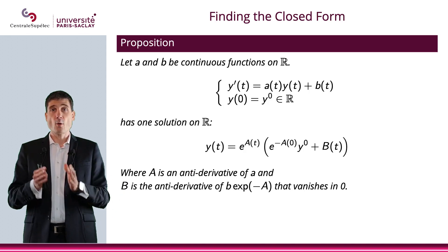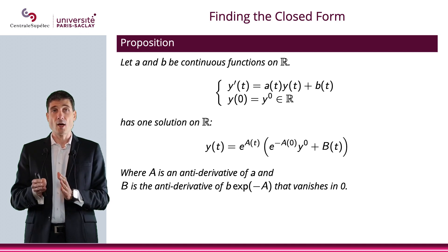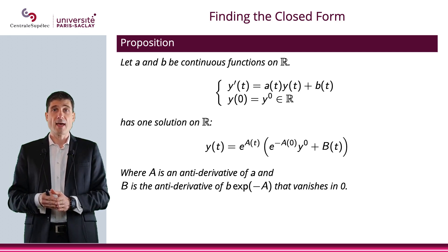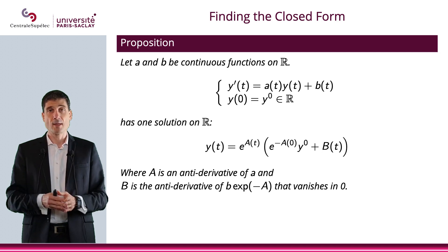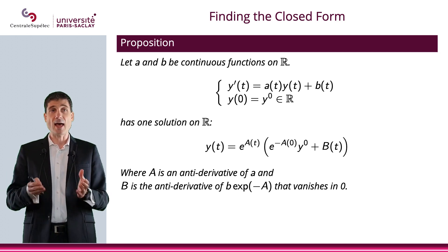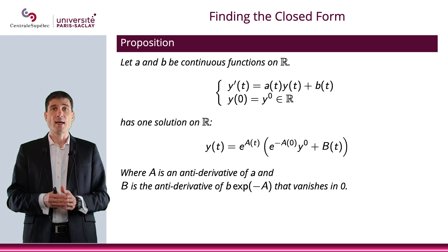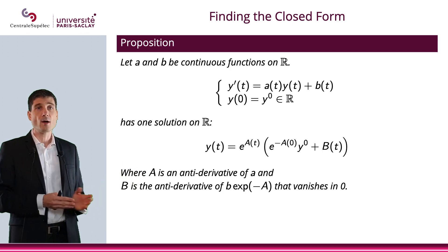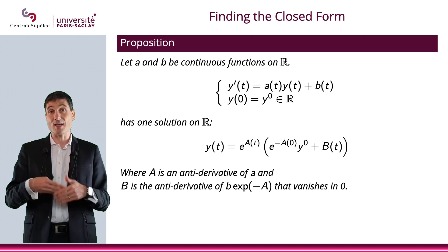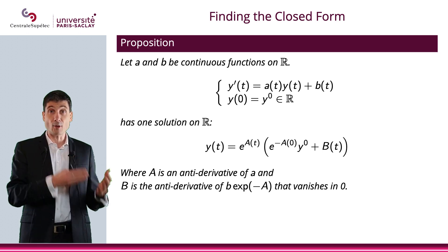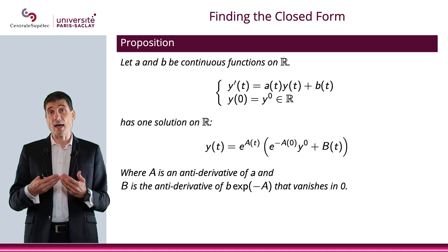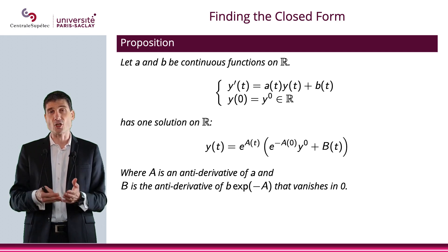Let me give you a proposition. When you have y'(t) equals a(t) — a continuous function — times y(t) plus b(t), another continuous function, with initial condition y(0) equals y0, that is an initial value problem: an ODE plus an initial condition. This IVP has one solution on ℝ, the global solution, given by y(t) equals e^(A(t)) times e^(−A(0)) times y0 plus B(t), where A(t) is an antiderivative of a, and B is the antiderivative of b times e^(−A) that vanishes at 0.